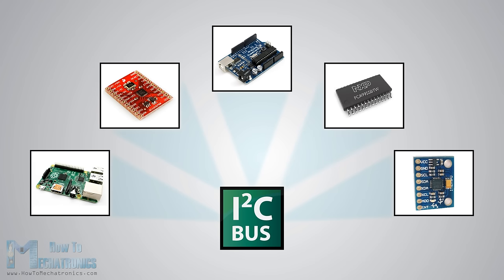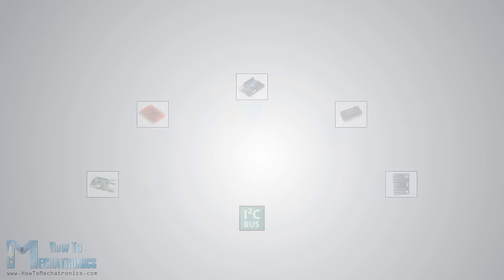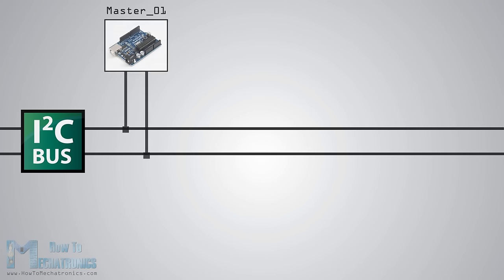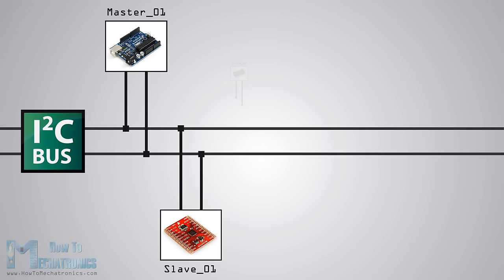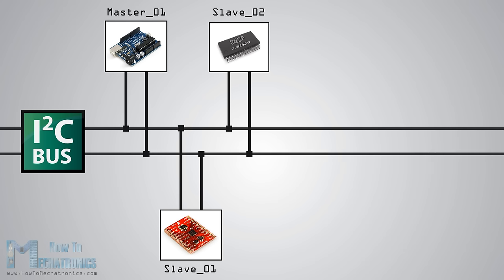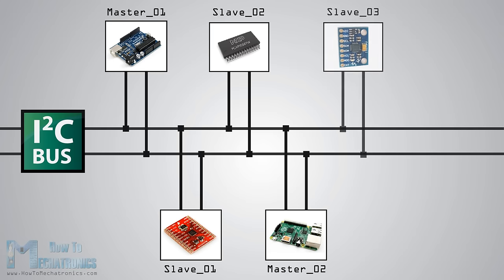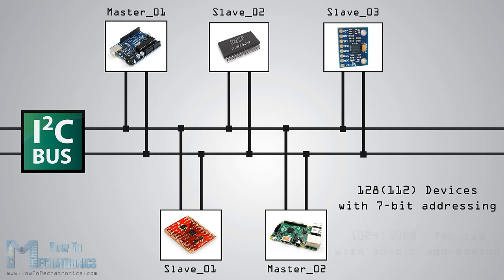The I2C communication bus is very popular and broadly used by many electronic devices because it can be easily implemented in many electronic designs which require communication between a master and multiple slave devices or even multiple master devices. This implementation comes with the fact that only two wires are required for communication between up to almost 128 devices when using 7-bit addressing and up to almost 124 devices when using 10-bit addressing.